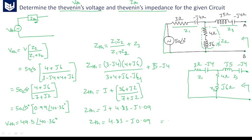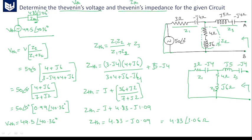By converting to polar form we get Zth is equal to 4.83 at an angle 1.06 degrees ohms. So in summary: Vth is equal to 49.5 at an angle 40.36 degrees, and Zth is equal to 4.83 at an angle 1.06 degrees ohms. This is Zth and this is Vth — this is the solution. Thank you.